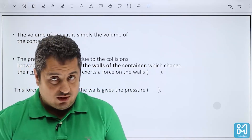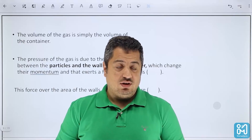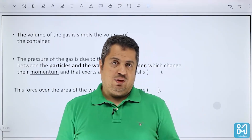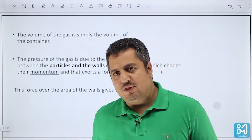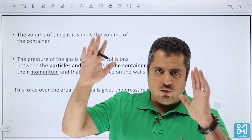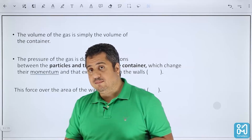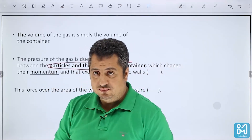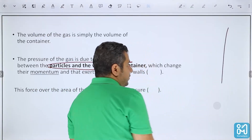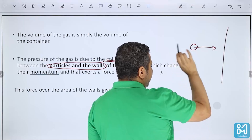The volume of the gas is the same as the volume of the container — we said this before. The pressure of the gas: if you remember from the pressure class, pressure equals force over area. For solids, the force is the weight; for liquids, it is the weight of the liquid. But for gas pressure it is different — we have to talk about collisions between the particles and the walls of the container.